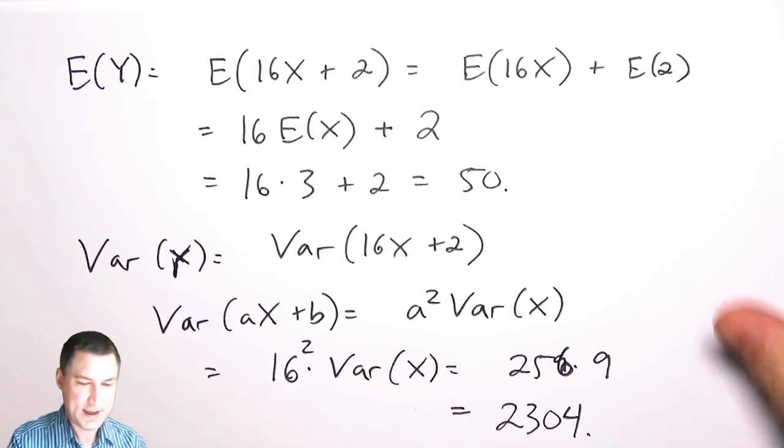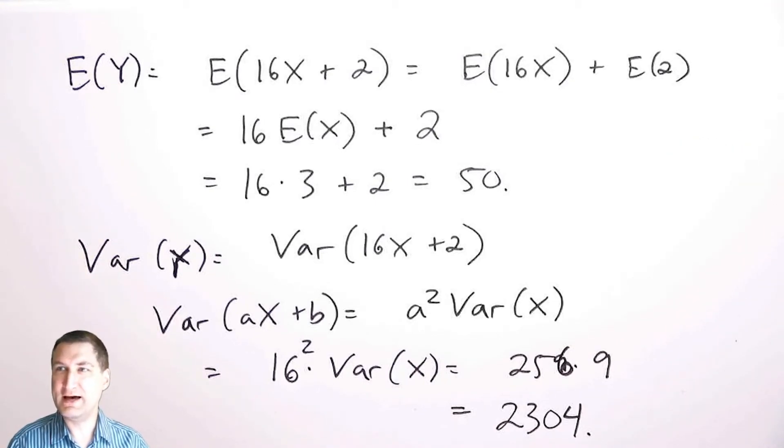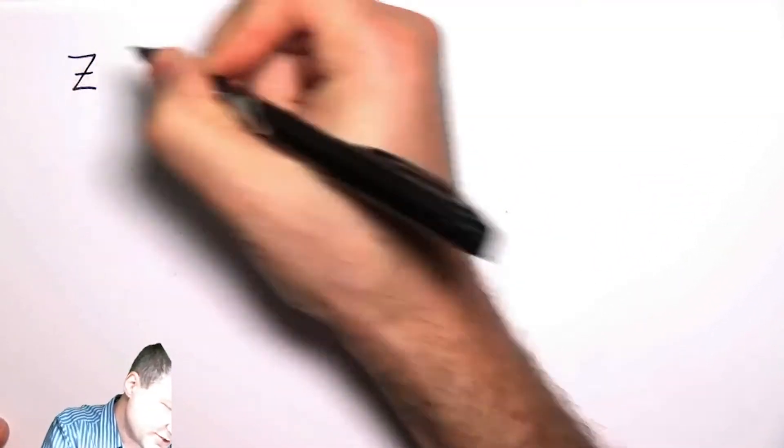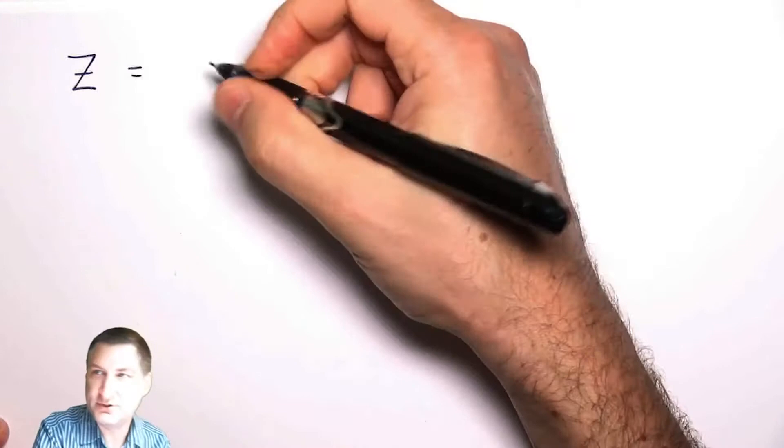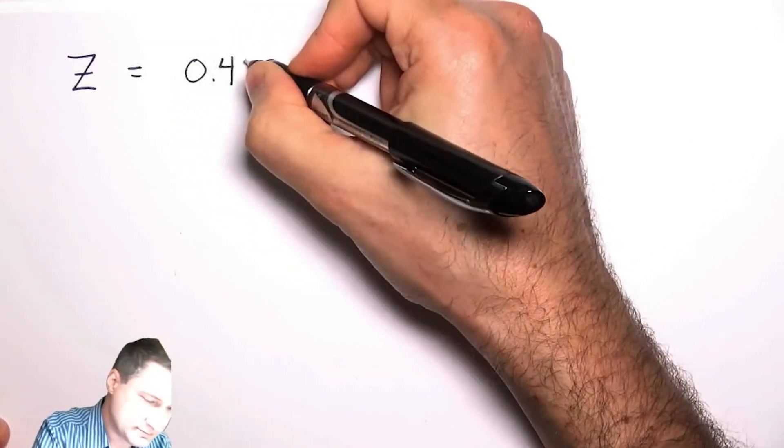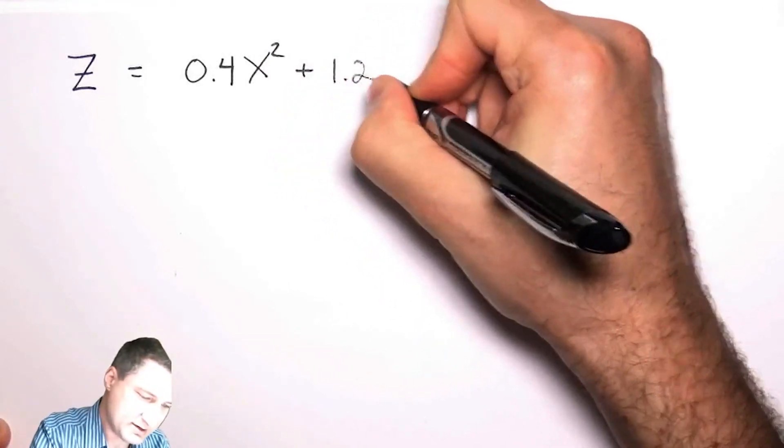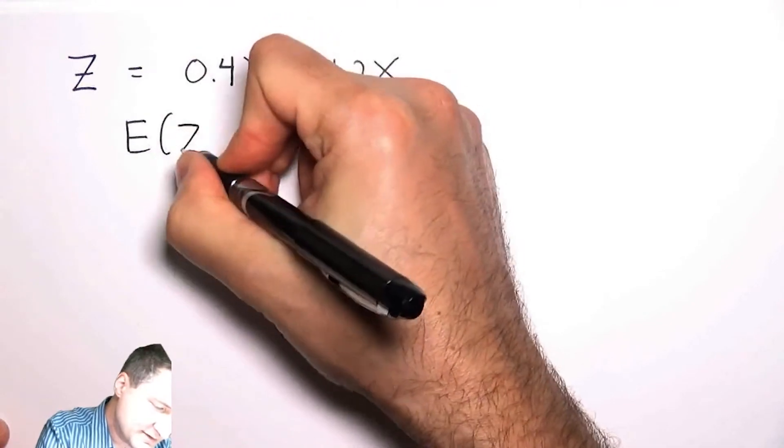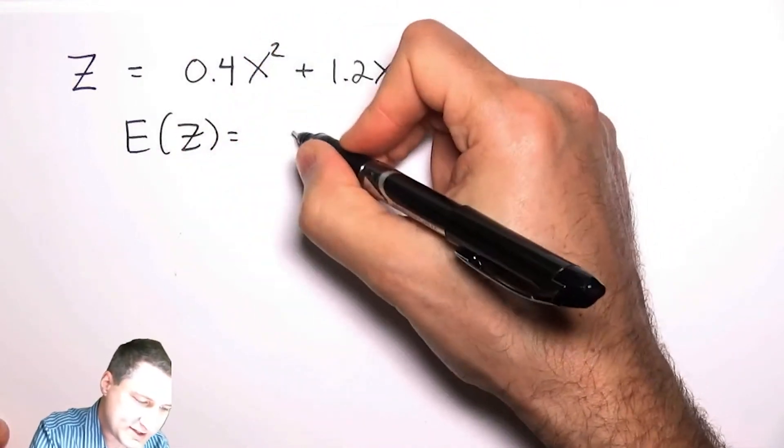Last, let's suppose that the time it takes the student to stagger home after the party is related to how much liquor they drank. So let's suppose that's related to X. Now I compute the expected value of Z.